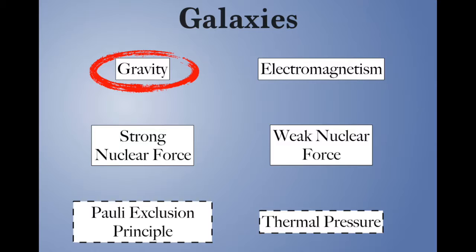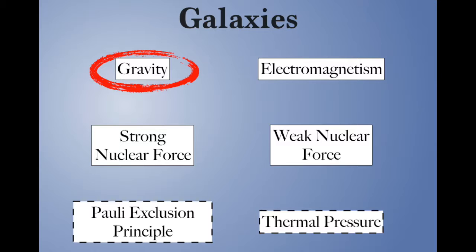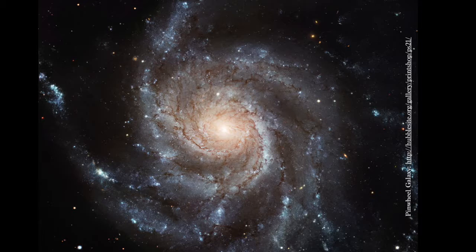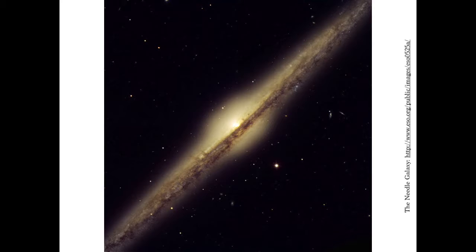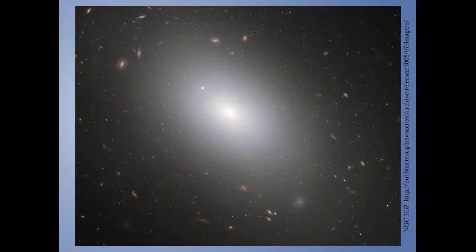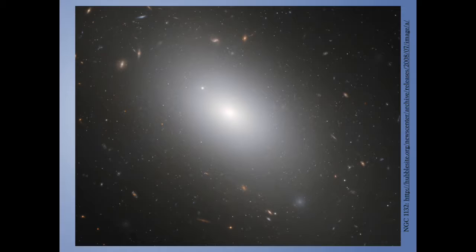That same difference between orderly rotation and chaotic random motion plays out again at a larger scale with galaxies. A spiral galaxy like the Pinwheel galaxy rotates in an orderly fashion — we can see this by measuring the speeds on each side. An elliptical galaxy holds itself together through random motion — they're not as pretty, which is why nobody puts them on astronomical calendars, and they just get names like NGC 1132.